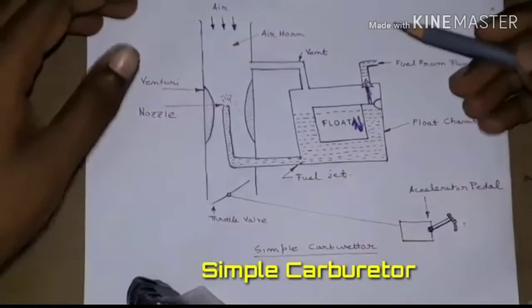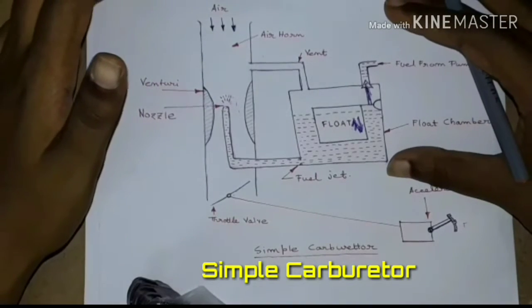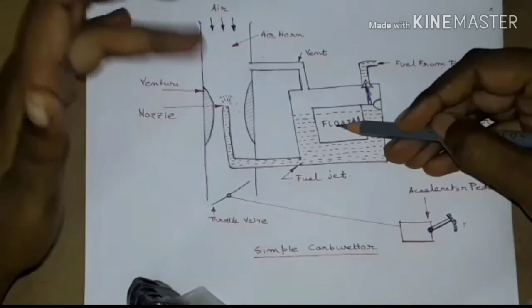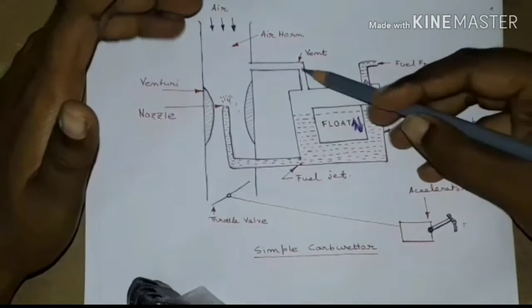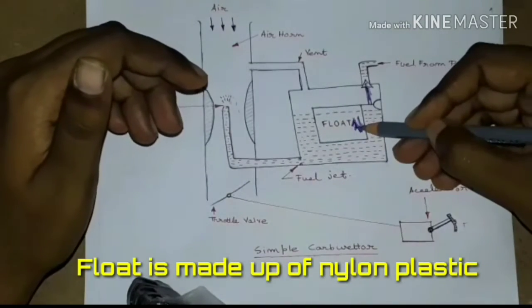This one here is a schematic diagram of a simple carburetor. The main parts are the float chamber, the fuel jet, the float, the nozzle, the venturi, the vent, and the throttle valve.